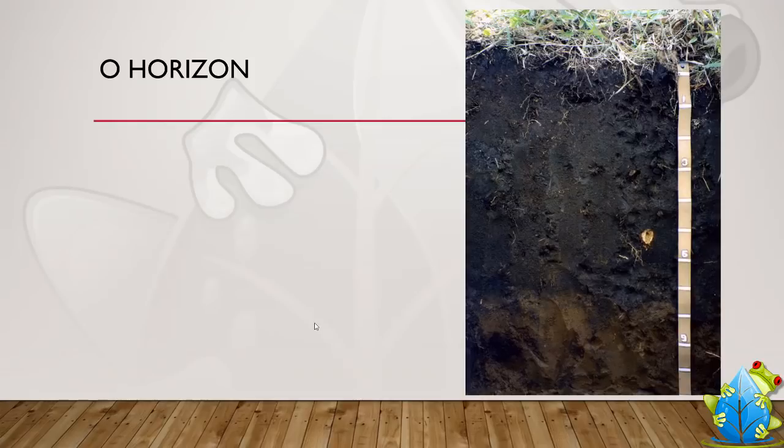So that's the O horizon, and here's an example. This is a kind of very peaty soil, lots of organics in the upper part, and so this top part here is your O horizon.